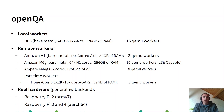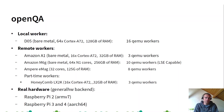We also have part-time workers. This is a HoneyComb LX2K machine, which is just next to me. It is mainly used to build packages, but sometimes when there is bandwidth, I start it as QEMU workers for OpenQA — I can enable up to 3 QEMU workers.